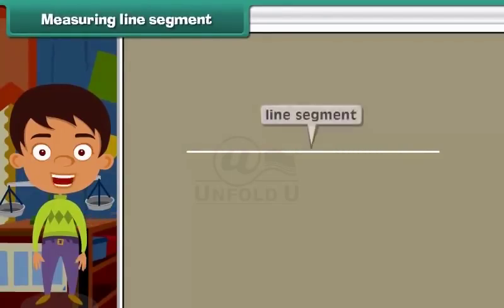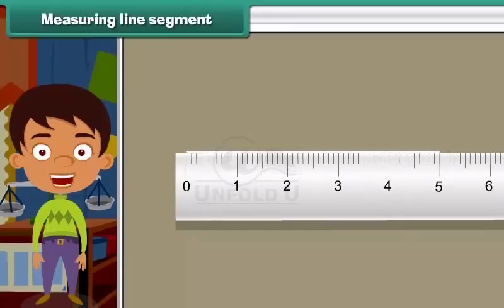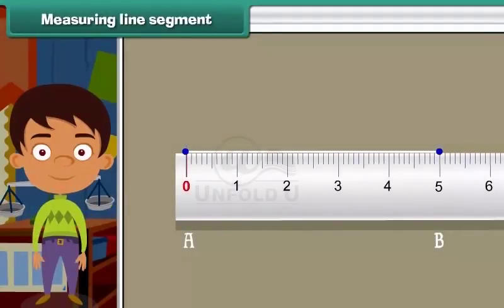Measuring line segments. It's time that we learn to measure a line segment. To measure the line segment AB, we use a centimeter scale. Put one end of the scale, starting with zero, just below point A. Going from point A to B, digits zero, one, two, three, four, and five are traveled. Therefore, the length of the line segment is five centimeters.